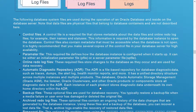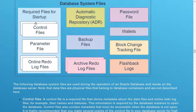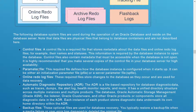The Control File is a required file that stores metadata about data files and online redo log files — for example their names and status. This information is required by the database instance to open the database. It is highly recommended that you make several copies of the control file — it should be multiplexed. The Parameter File is a required file that defines how the database instance is configured at startup — it can be either an initialization parameter file (pfile) or a server parameter file (SPFILE). The Online Redo Log Files are required files that store changes to the database as they occur and are used for data recovery.